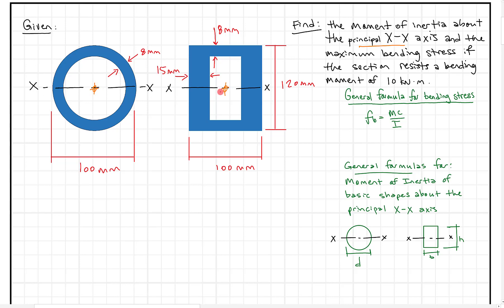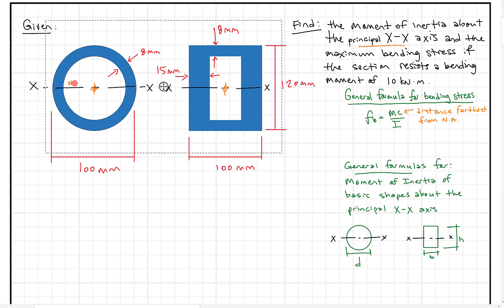Where the center of gravity is, that principal axis passes right through there. We're going to find the moment of inertia and the maximum bending stress if the section resists a bending moment of 10 kilonewton meters. Our general formula for bending stress is: bending stress equals moment times C over I, where C is the distance farthest from the neutral axis — the distance farthest from the neutral axis, or NA.